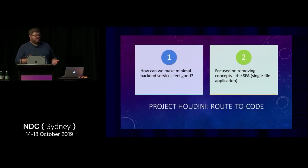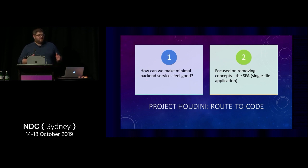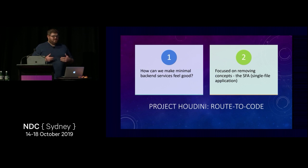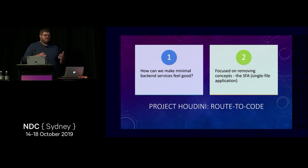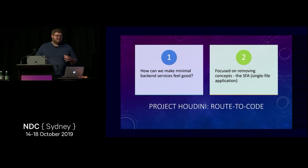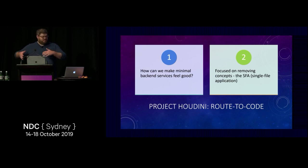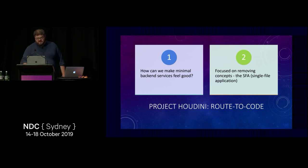That brings me to Project Houdini and something I call 'route to code.' I'm asking two questions: how can we make minimal backend services feel good? When I say minimal, I mean do you have a service with like four endpoints? Do you have a service where you'll write 50 lines of code? We look at Go and say, well Go can do that — I bet we could make .NET do that. Can we remove some concepts, simplify things, make it scale well to a really small amount of code? We already do a pretty good job when you have a large amount of code.